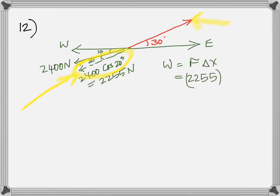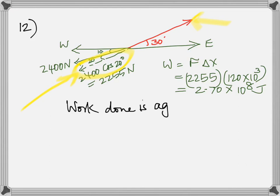Multiply the force 2255 times the displacement, 120 kilometers changed into meter. You get that as 2.7 times 10 to the 8. But remembering that this is work done against, you know that it's negative that much. Because the airplane is doing work against, like doing work against friction.